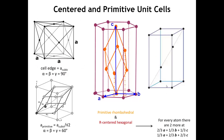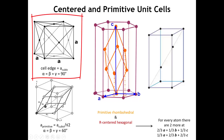Looking at the primitive unit cell and the centered unit cell for a couple of those centered lattices is instructive. At the top we have the face-centered cubic unit cell: a lattice point at each corner of the cube and an equivalent lattice point at the center of each face. This unit cell contains four lattice points per unit cell — the eight corners each contribute one-eighth, giving one lattice point, and the six face-center points each contribute one-half, giving three more, for a total of four.